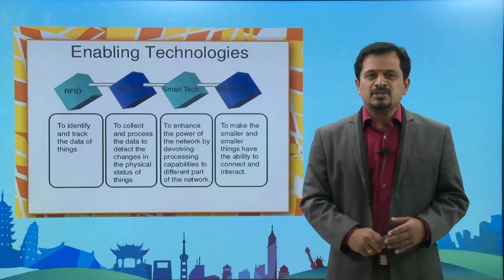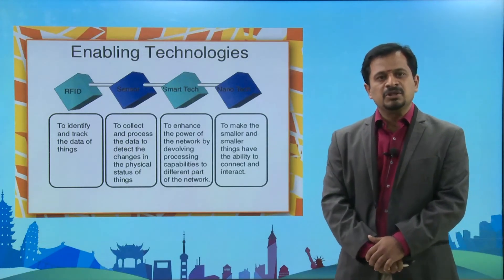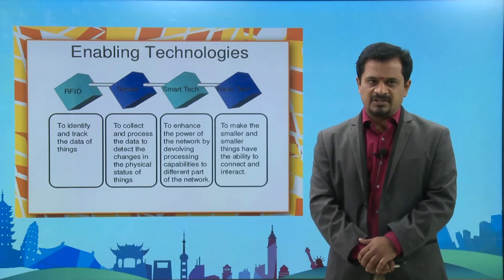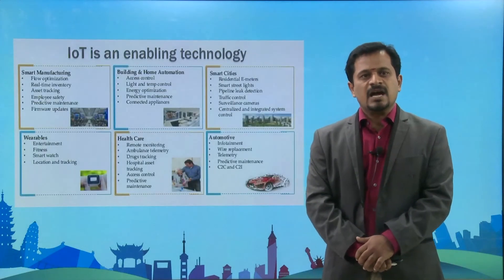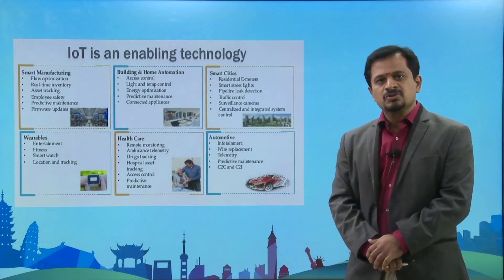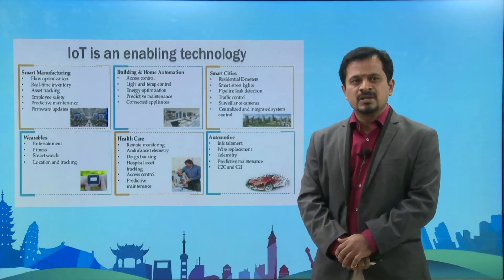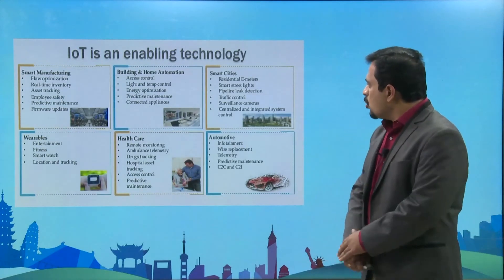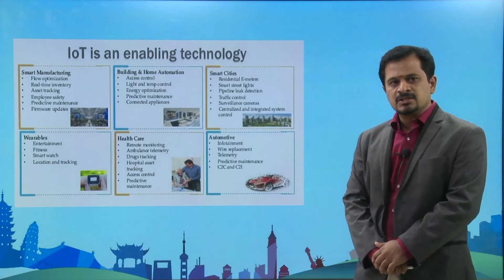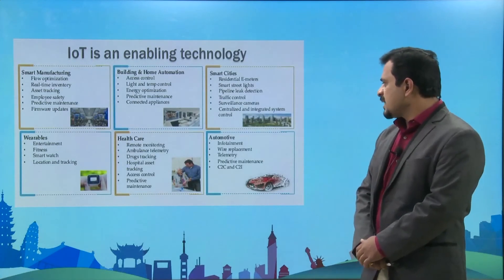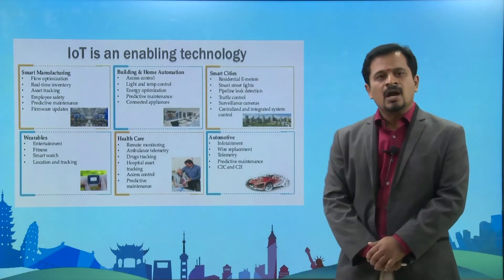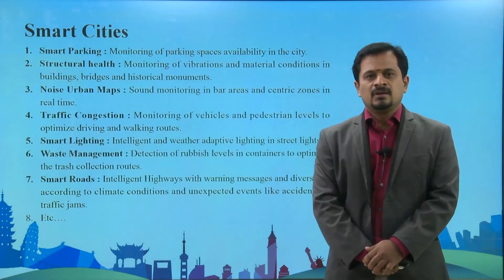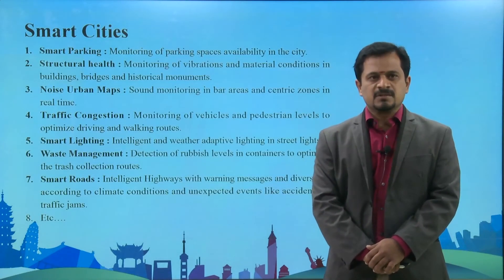So that the energy consumption as well as the ability to connect and interact with all other devices is improved. These IoT enabling technologies are going to support major domains like smart manufacturing, building and home automation, smart cities, wearables, healthcare, and automotive.